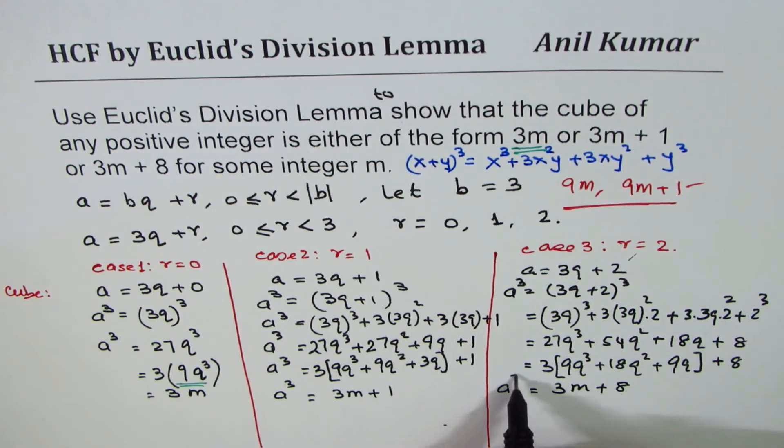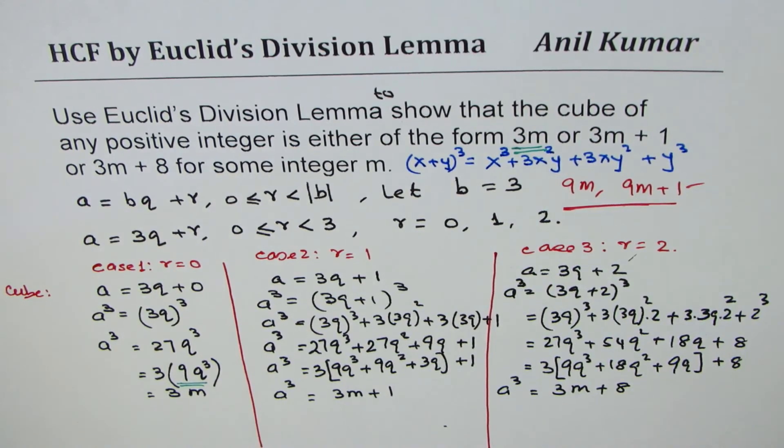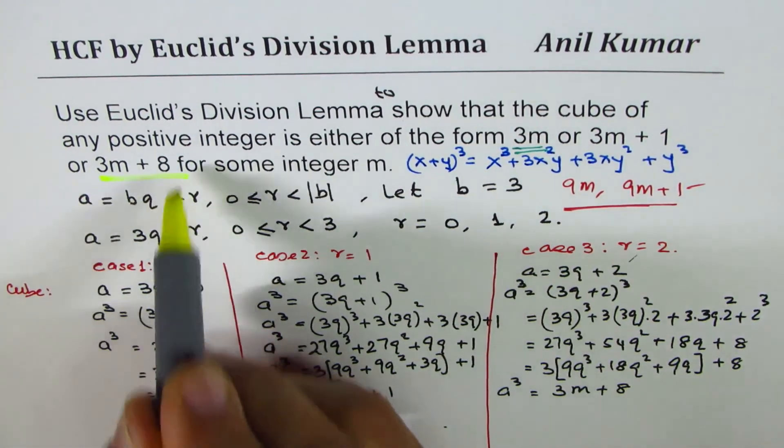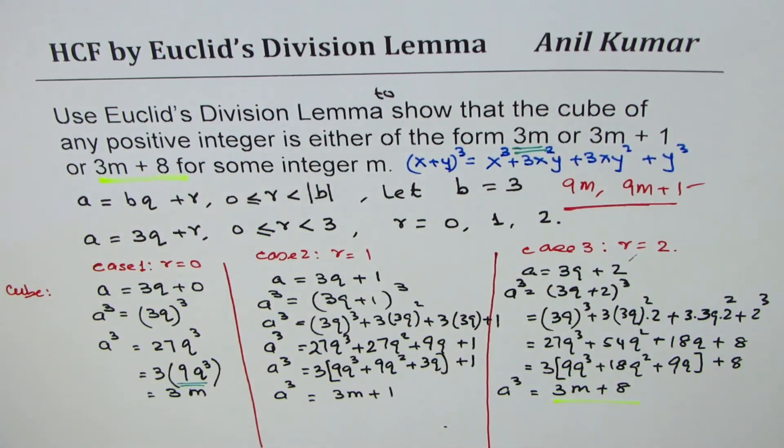Now I could write this as 3M plus 8. Do you see that? Which is A cube. So we have shown that it could be 3M plus 8.